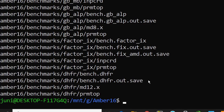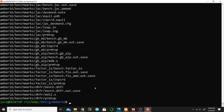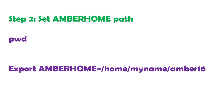Now the first step is completed and we will move toward the second step. The second step is to set the AMBER_HOME path. First of all, you will find the path where AMBER 16 is present using the pwd command.